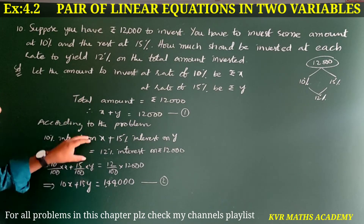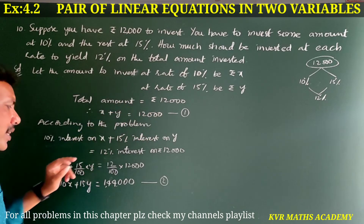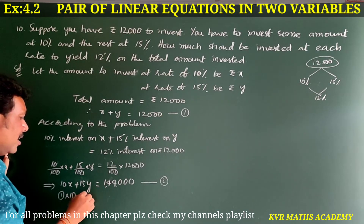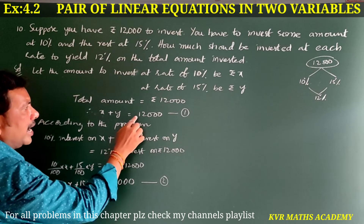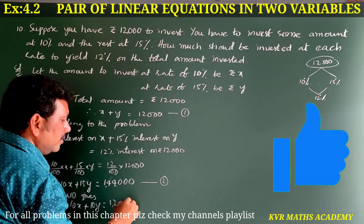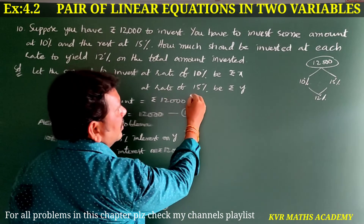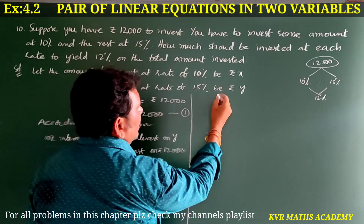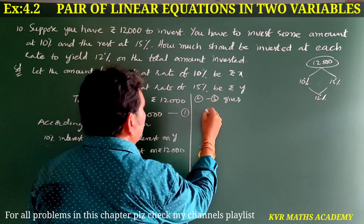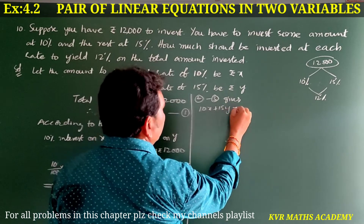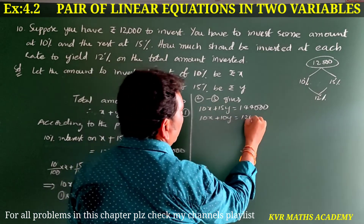For simplification, multiply equation number 1 by 10 on both sides. That gives 10X plus 10Y is equal to 120,000. This is equation number 3. Now subtracting equation 3 from equation 2: 10X plus 15Y equals 144,000 minus 10X plus 10Y equals 120,000.